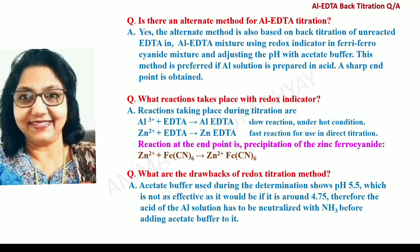What reactions take place with the Redox indicator? The reactions take place in two steps, same as with the EBT indicator. In the first step, Aluminium reacts with EDTA under hot conditions — a slow reaction. In the second step, the unreacted EDTA is titrated with zinc ions from the burette — a fast reaction. At the end point, the ferrocyanide, added along with the indicator, reacts with the zinc ions to form a zinc ferrocyanide precipitate whose color appears at the end point.